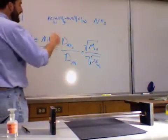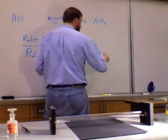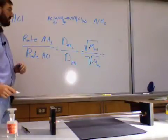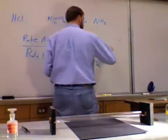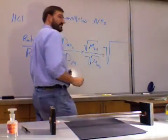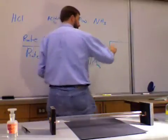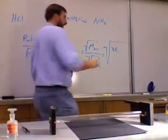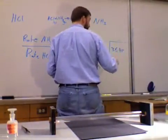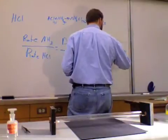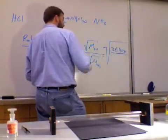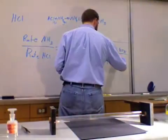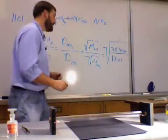So we can calculate what this ratio should be equal to. Right? We can calculate theoretically what that value is. So we would take the square root of the molar mass of the hydrochloric acid, which is 36.45, 46 maybe, 458, depending on how you're doing it, 456. And the molar mass of the ammonia should be... What? 17.01? Oh, three. Yeah. That's right. Thank you.